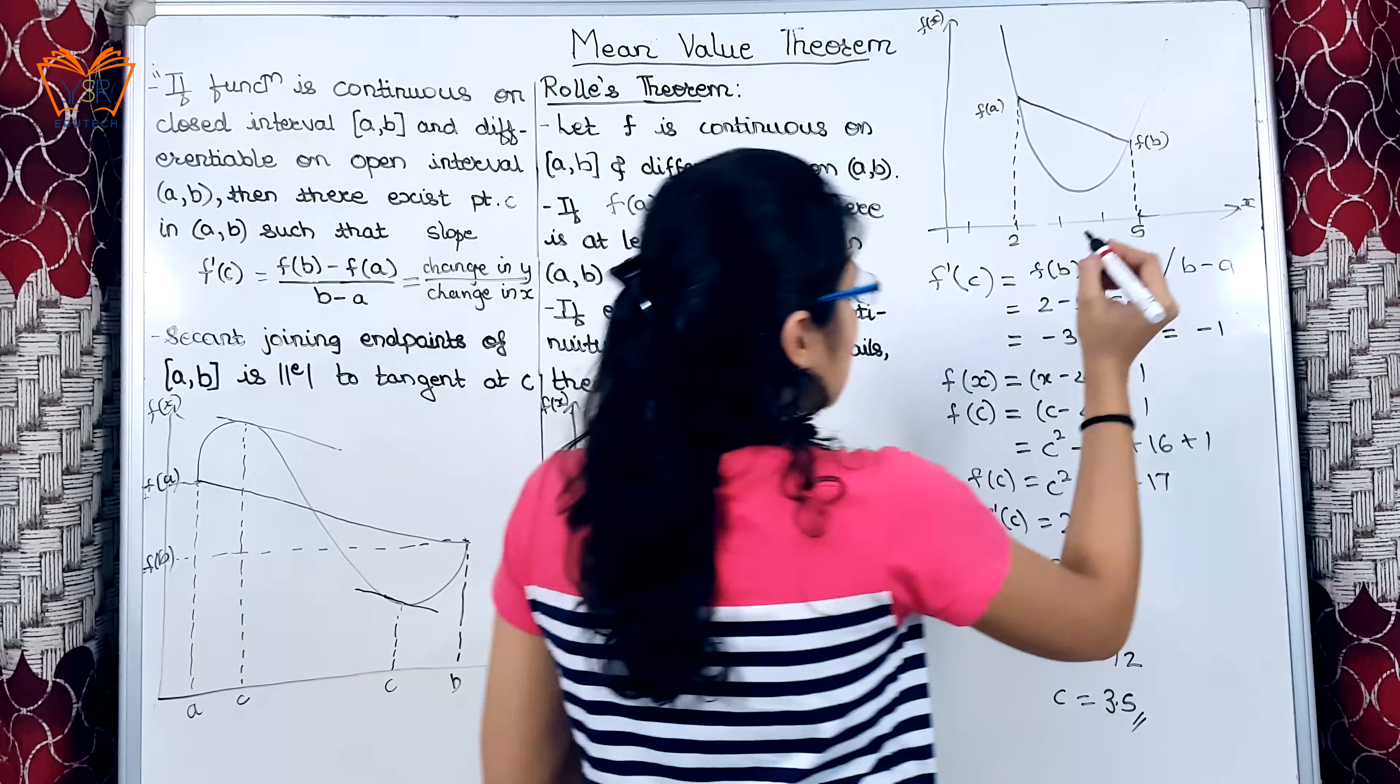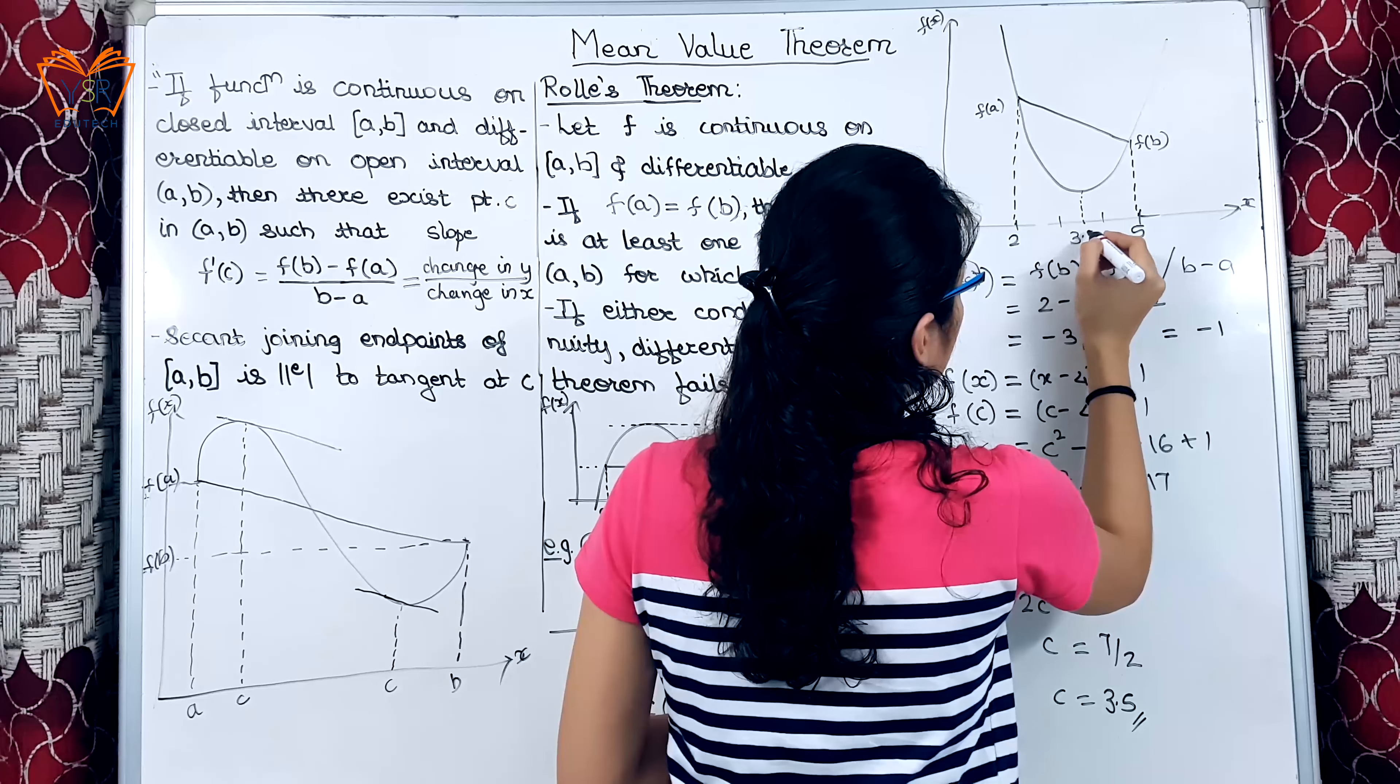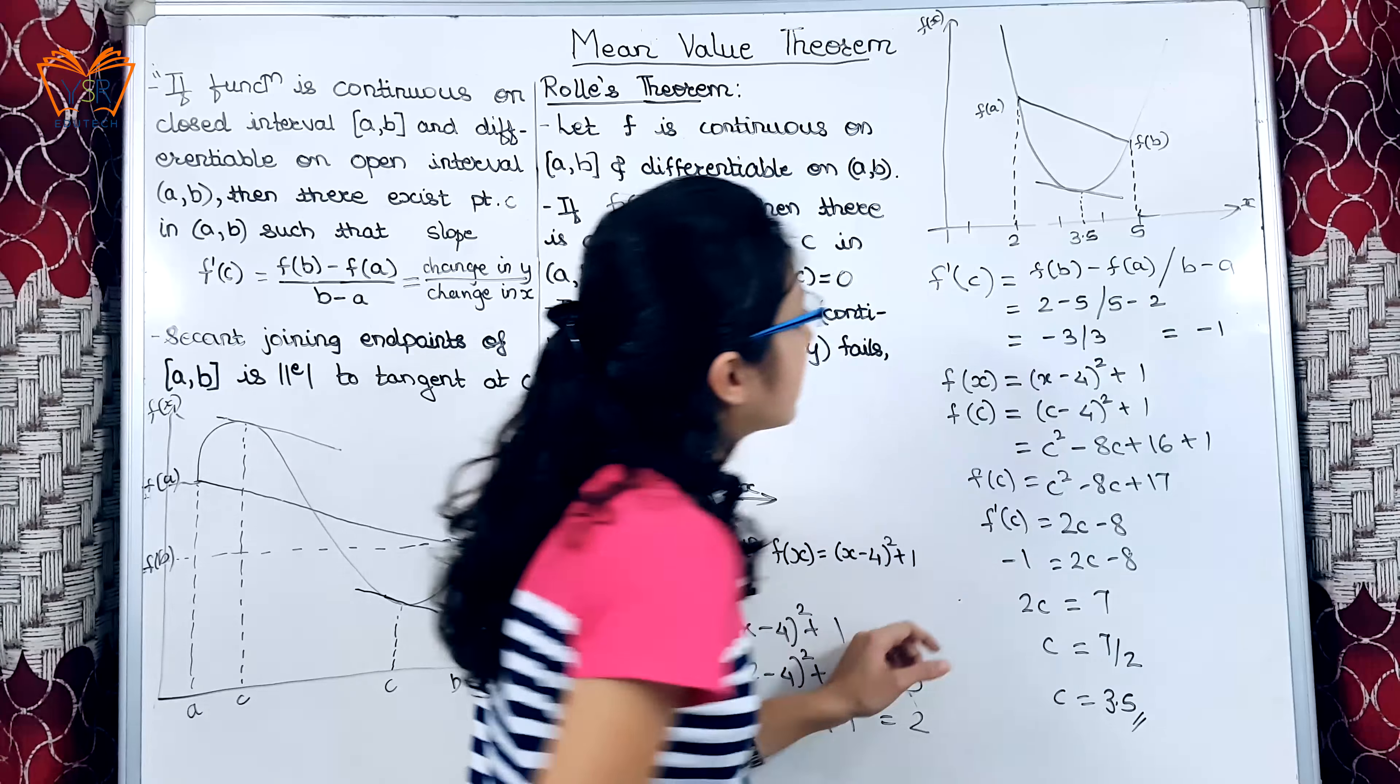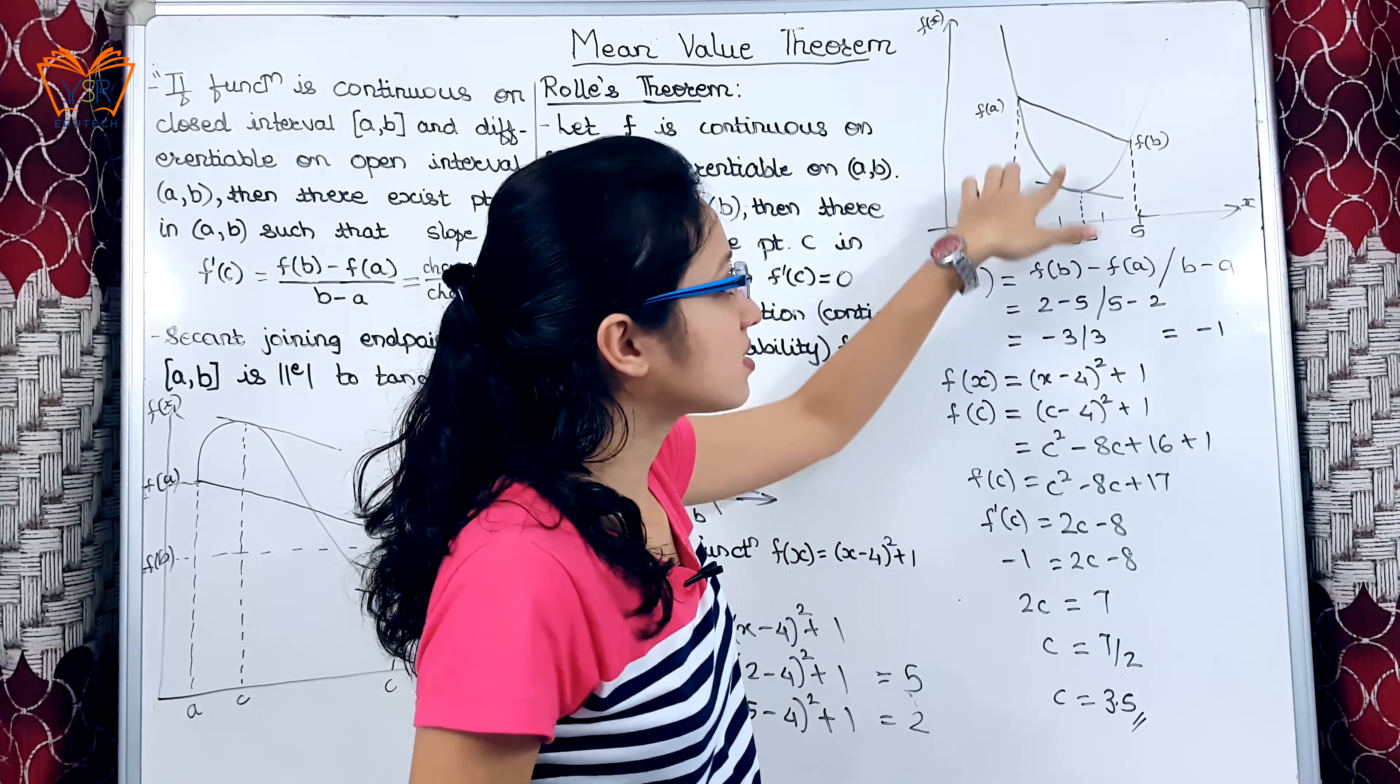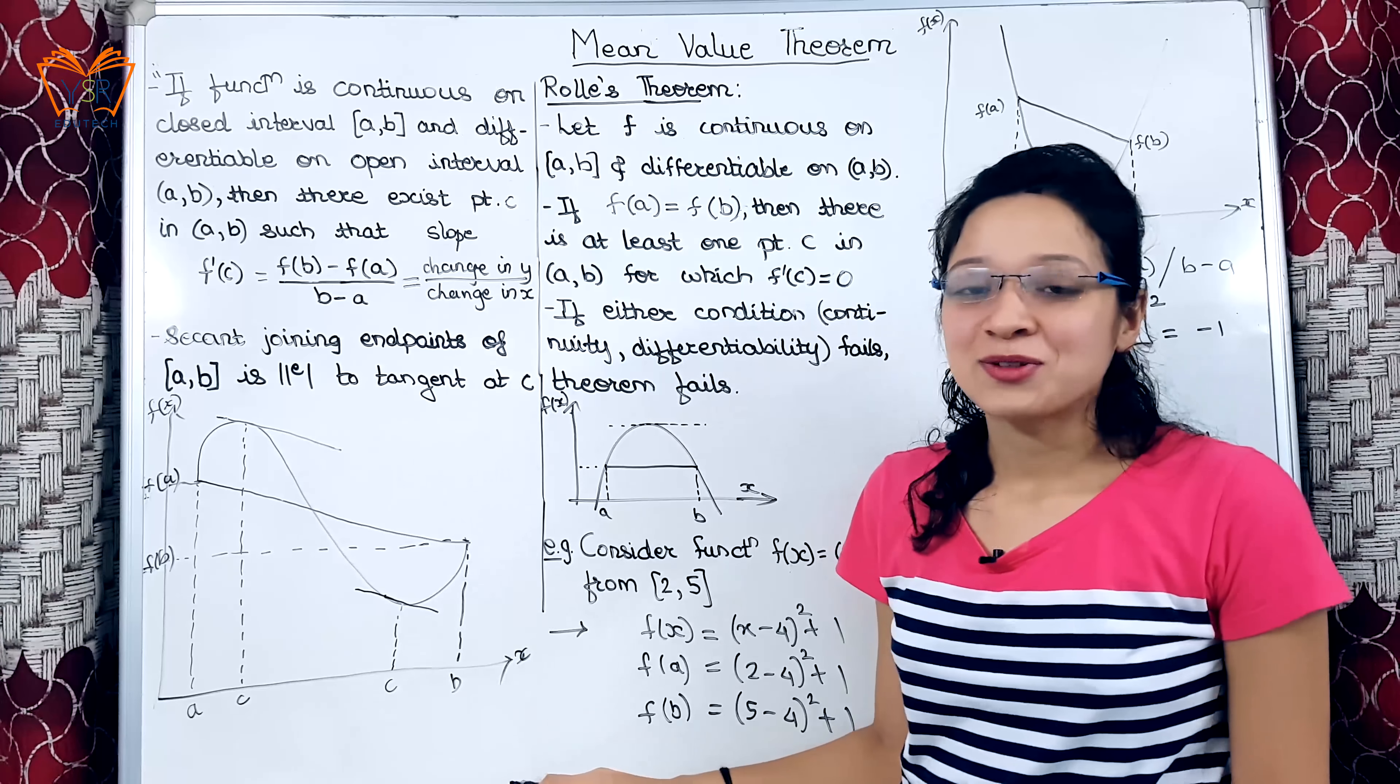That means, in graph this is our c point 3.5. So, we will draw a tangent here and these both are parallel to each other or the slope at these two lines are equal. So, this is all about mean value theorem.